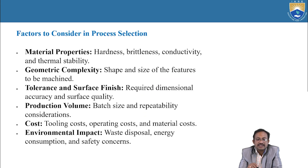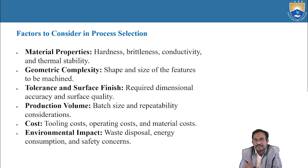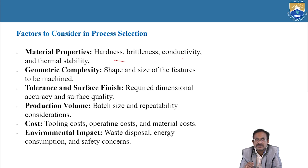Factors to consider in process selection: material properties, geometric complexity, tolerance and surface finish, production volume, cost, and environmental impact. Regarding material properties, factors include hardness, brittleness, conductivity, and thermal stability. These are the material properties involved in consideration of process selection.